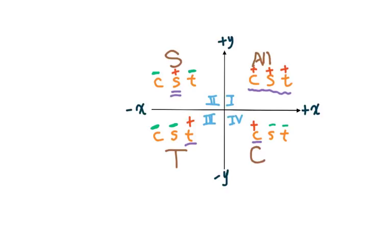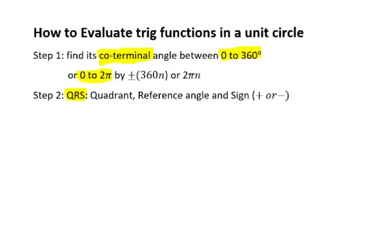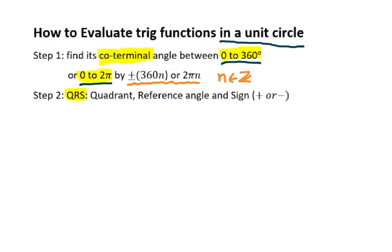Here are the steps to evaluate trig functions in a unit circle. Step 1: find its coterminal angle between 0 and 360 degrees, or from 0 to 2π, by adding or subtracting 360 times n, or 2π times n, where n is an integer. The reason we do that is it's easy to figure out the quadrant. Step 2: QRS — Quadrant, Reference angle, and Sign.